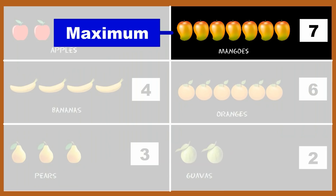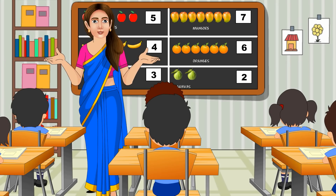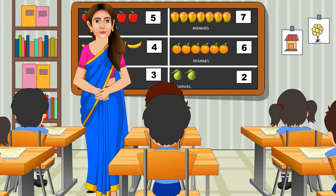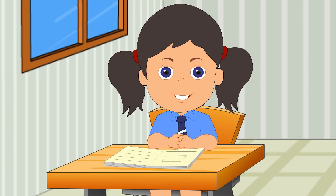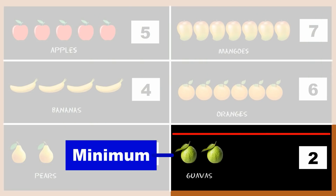Which fruit occurs in the maximum number? It is mangoes, it is seven in number. Now see and tell which fruit occurs in the minimum number. Madam, it is guava. It is only two in number.